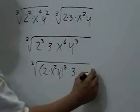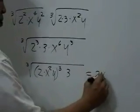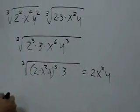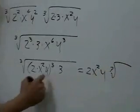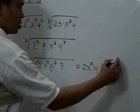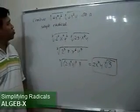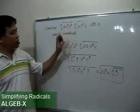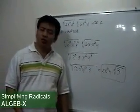So we can take this 2x squared y out, because we have the cube root of a perfect cube, times the cube root of the remaining factor, which is just 3. So the single radical expression, which is equal to this original product, is 2x squared y times the cube root of 3.